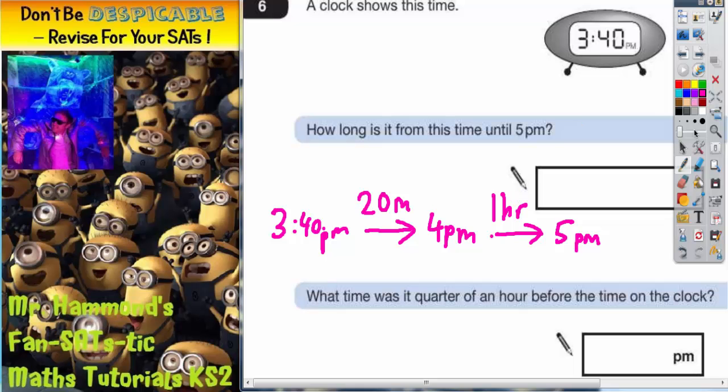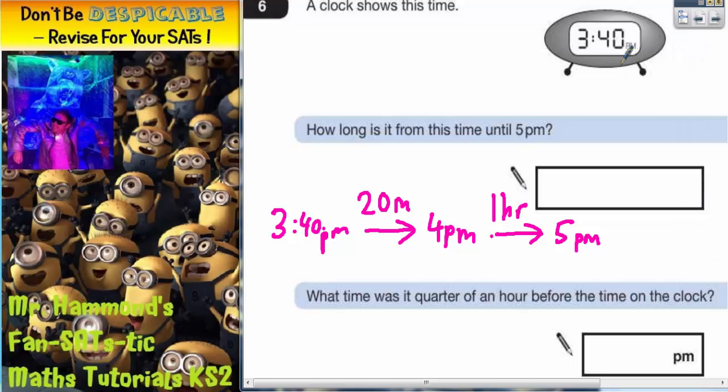So all we've got to do now is collect together the two small chunks that we've made. We've got 20 minutes and one hour. Put them together, you're going to have one hour 20 minutes. So you need to put in here one hour 20 minutes.